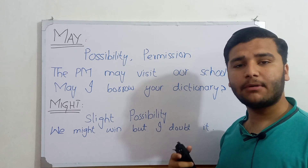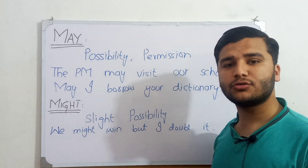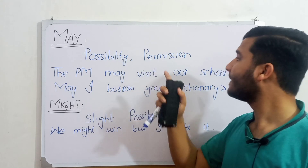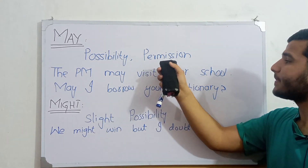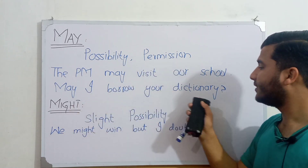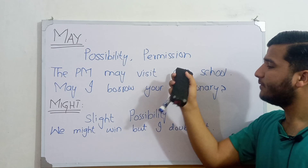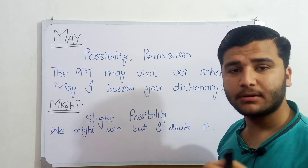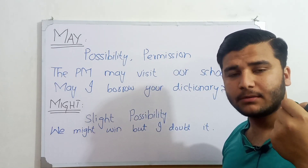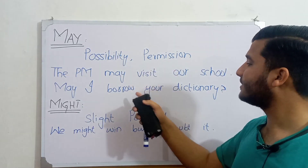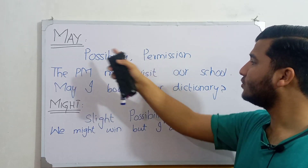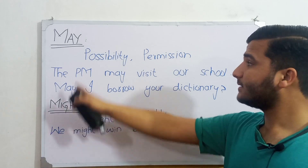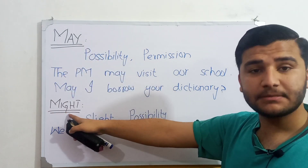We also use 'may' to predict the future, so it can be used alongside 'will' and 'should.' For permission, we use 'may' as well: 'May I borrow your dictionary?' This shows we can use 'may' for seeking permission. 'Might' is the second form of 'may' and has only a 30% chance of the action occurring.